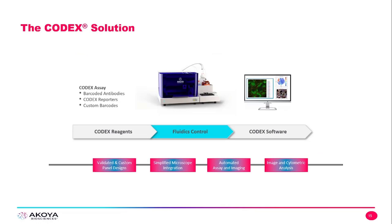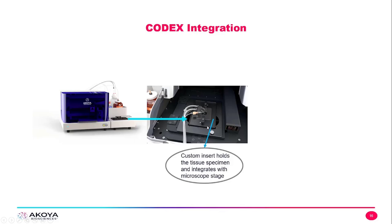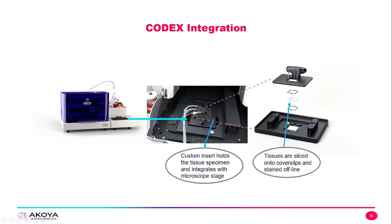The next step of the CODEX solution is the fluidics control, which includes all of the automation necessary to run both the fluidics of the instrument as well as the microscope. The CODEX integrates with the microscope — the fluidic lines lead to the stage, and the custom insert holds the tissue specimen and integrates with the microscope stage. The tissues are sliced onto cover slips and stained offline, and they fit between two gaskets. This whole CODEX insert sits on the stage of the microscope.